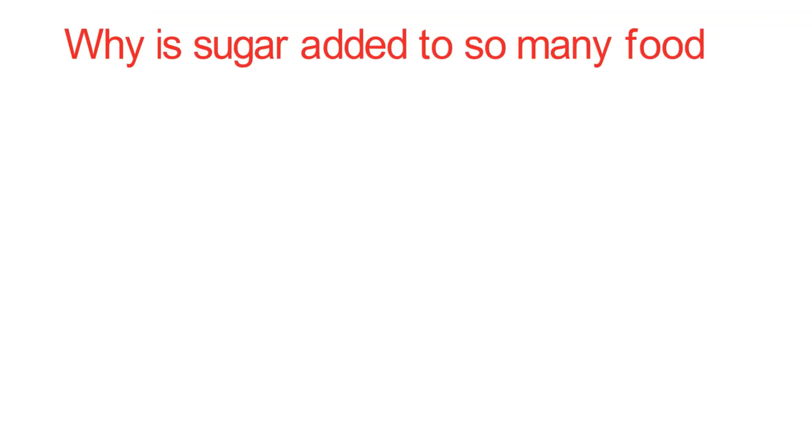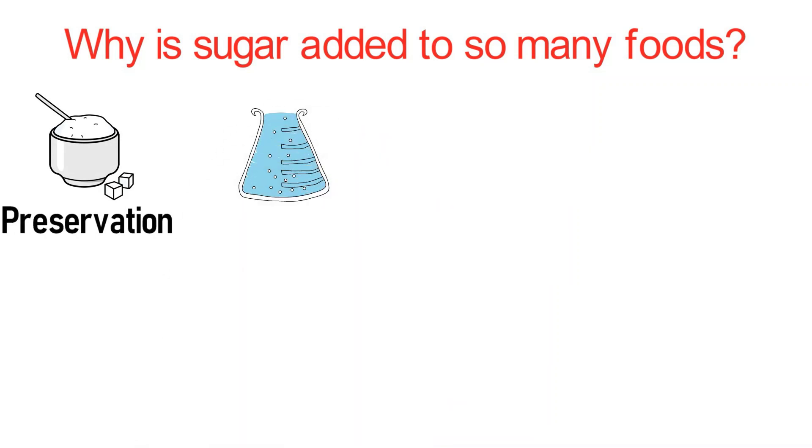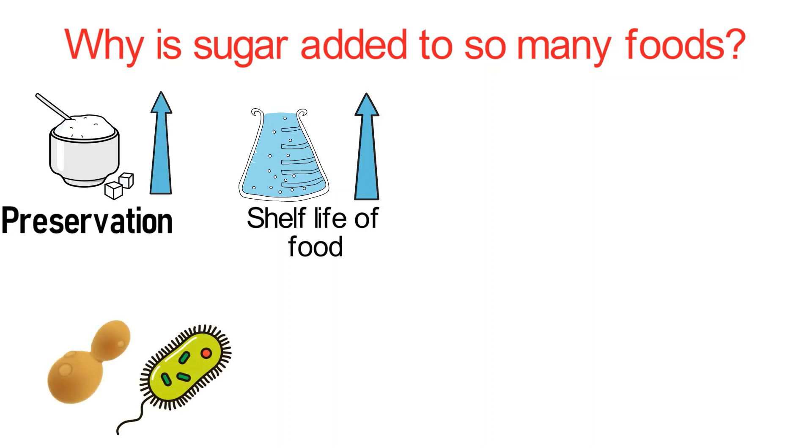So why is sugar added to so many foods? One functional property of sugar is preservation. Sugar is very good at absorbing water, which helps extend the shelf life of foods. Water is necessary for things like yeast and bacteria to flourish. So the more sugar something contains, the longer it is able to hold off the offending growth.